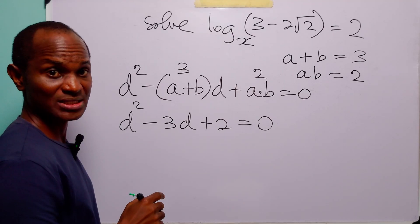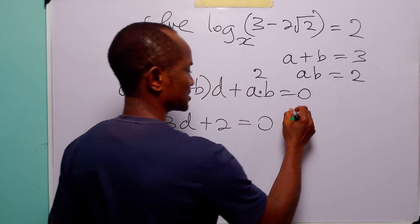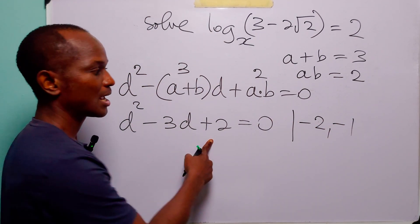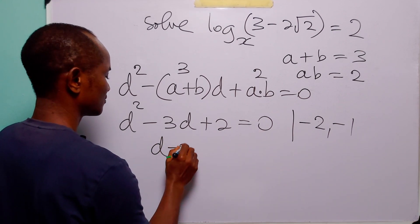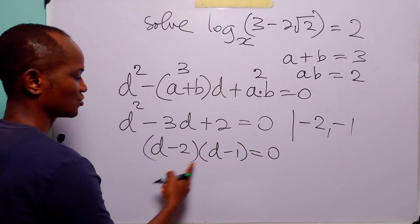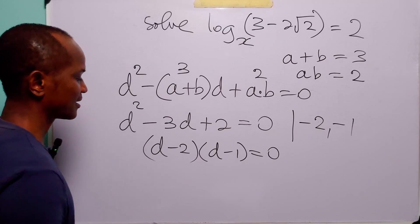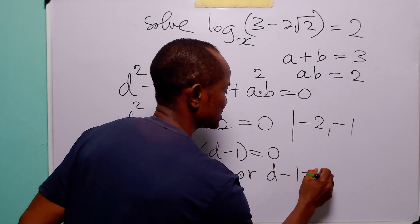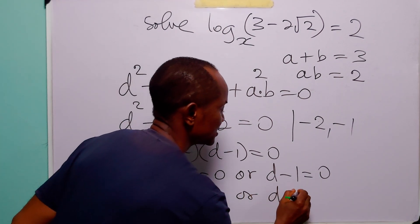We can factorize this quadratic equation by finding the factors of positive 2 that add up to minus 3. Those are minus 2 and minus 1, because minus 2 times minus 1 equals plus 2, and minus 2 plus minus 1 equals minus 3. So we have (d minus 2)(d minus 1) equals 0, giving us d minus 2 equals 0 or d minus 1 equals 0.